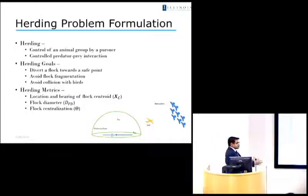So now we know that there's this problem and we would like to abstract a simpler problem, something that we can study, for which we can propose solutions and give some guarantees. So for this talk and for this work, we would define herding as the control of an animal group by a pursuer. So this pursuer is, in our case, the robotic falcon. And we assume that the herding occurs because there's a controlled predator-prey interaction. So there's an inherent assumption that these animal flocks are afraid of the predators, and we're going to capitalize on that.